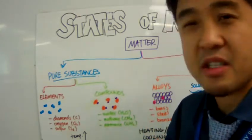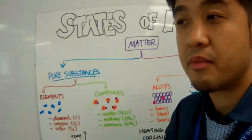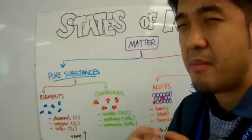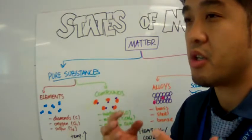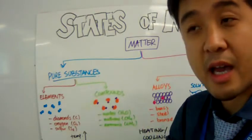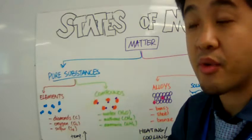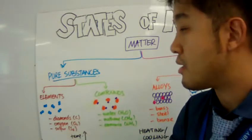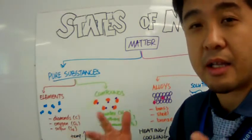But elements don't have to come in a diatomic form. There are many types of diatomic molecules or elements out there - hydrogen gas, nitrogen gas, chlorine gas, fluorine gas. Those are diatomic.